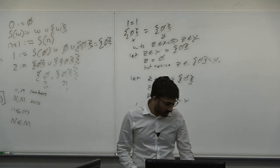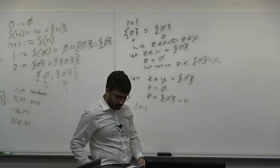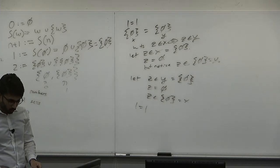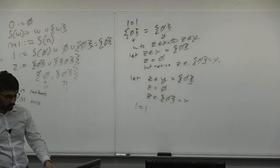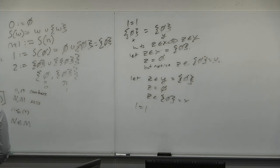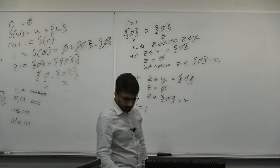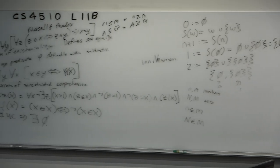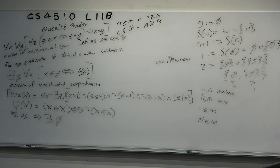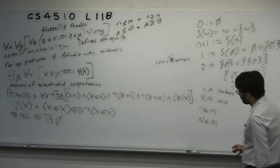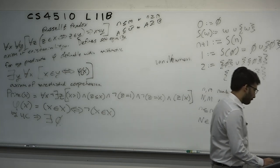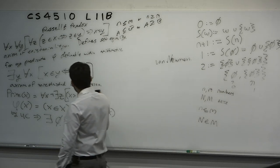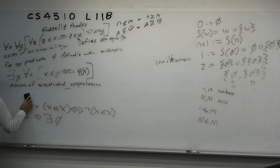We've constructed the naturals from sets and proved that 1 equals 1. Now let's get to the whole point of today's lecture, which is Russell's Paradox. I'm going to keep the axiom of unrestricted comprehension up here because I need it.